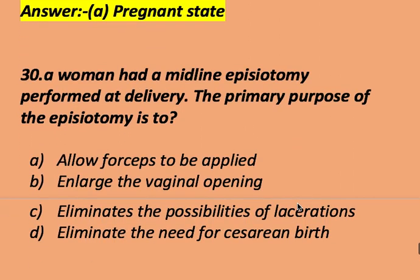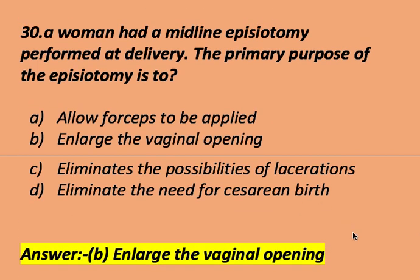A midline episiotomy is performed at delivery. The primary purpose of the episiotomy is to: allow forceps to be applied, enlarge the vaginal opening, eliminate the possibility of lacerations, or eliminate the need for cesarean birth. The right answer is to enlarge the vaginal opening.